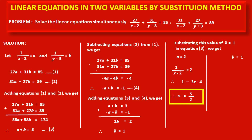Now, b = 1. We substitute the original value of b, because b is our assumed variable. Its original value is 1/(y+3), so 1/(y+3) = 1. By cross multiplication: 1 = y + 3. Therefore, y = 1 - 3 = -2. This is the value of the second original variable y, which is -2.